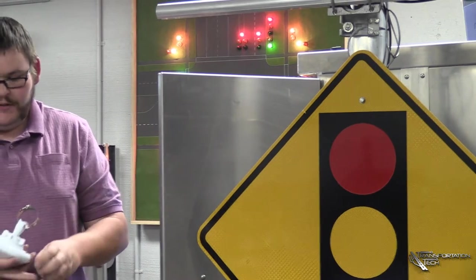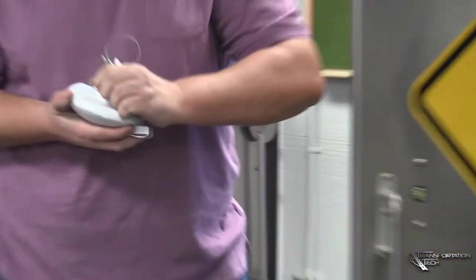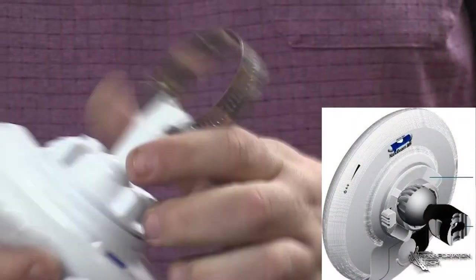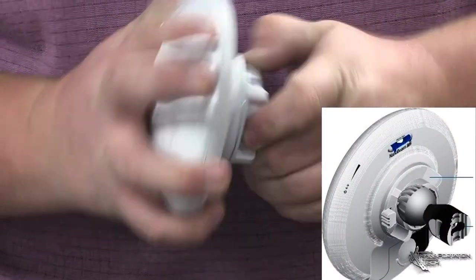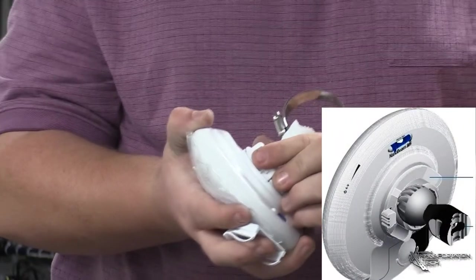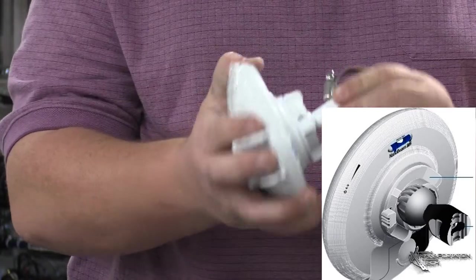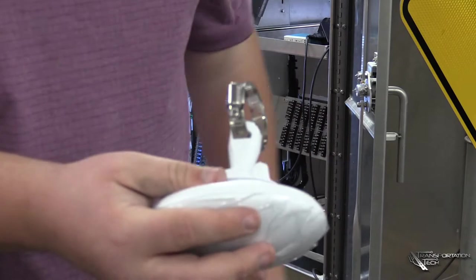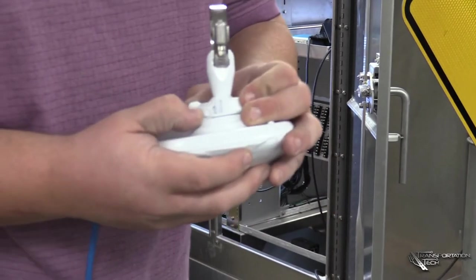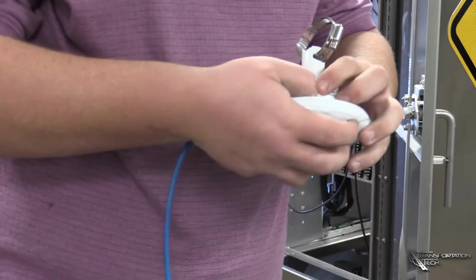This one is kind of neat because it has its own ball and knuckle mount. If I loosen this you can actually move this knuckle around so that you can actually aim it to wherever you're going. Makes it really nice when it's up there to align the radio.